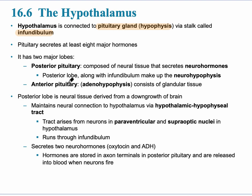The pituitary secretes at least eight major hormones, and this is part of the hormonal stimuli. The pituitary has two major lobes. The first is the posterior pituitary, also called the neurohypophysis, and it secretes neurohormones — specifically oxytocin and ADH.